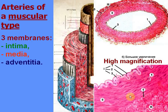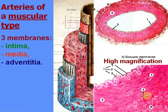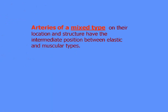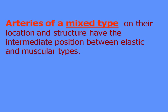The media consists of many layers of smooth muscle cells. The outer elastic membrane is not so well pronounced. The adventitia is thinner compared to the tunica media. Arteries of mixed type have an intermediate position between elastic and muscular types based on location and structure. Examples include arteria subclavia and arteria carotis communis.